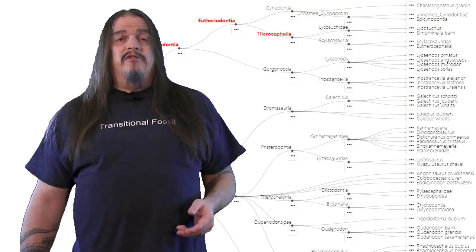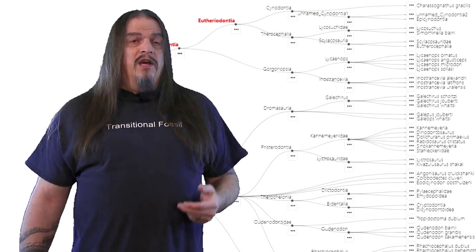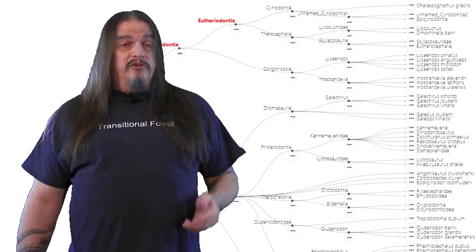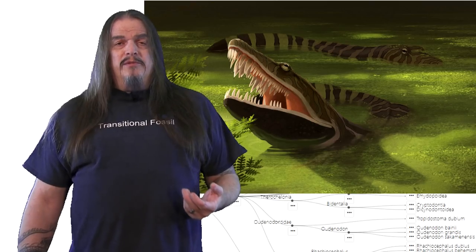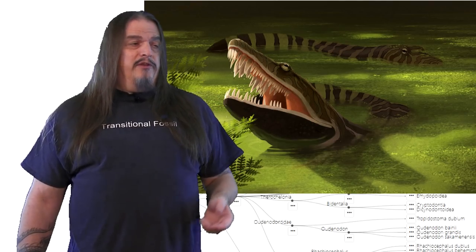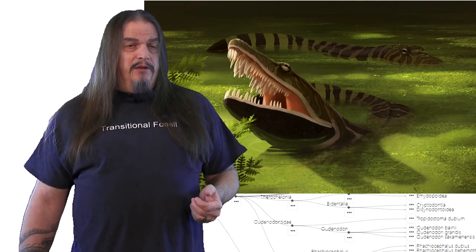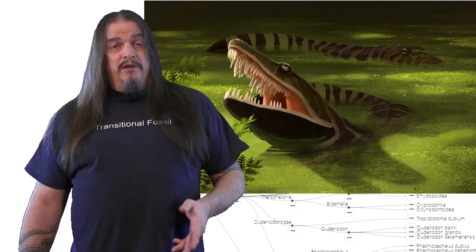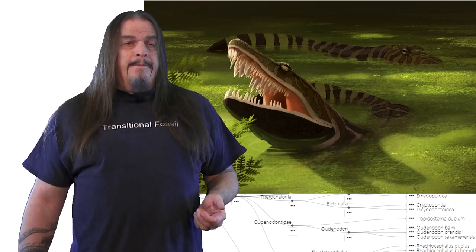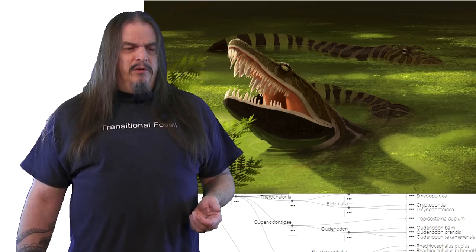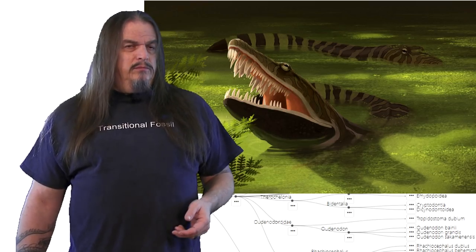We're not theracephalians, but we are eutheriodonts, and they're distinguished primarily by two changes in the roof of the mouth. First, other lineages, or more primitive animals, sometimes have additional teeth in the roof of their mouth, as shown by this Carboniferous amphibian, Anthracosaurus. Eutheriodonts don't have teeth in the roof of their mouths. Fortunately, hard to imagine that. It'd be so awkward. You know what I mean.